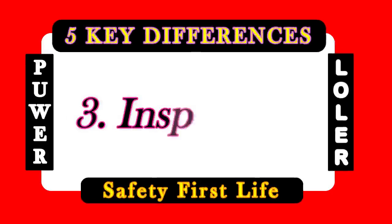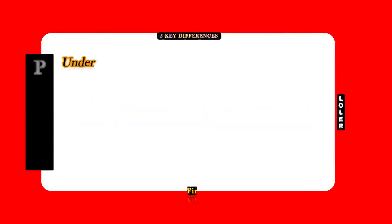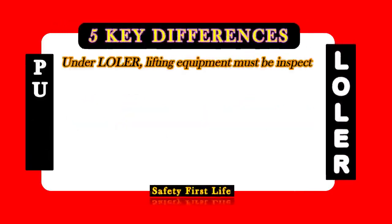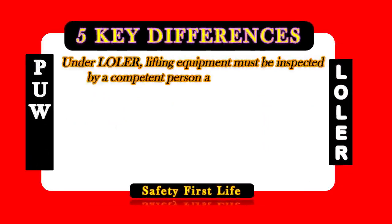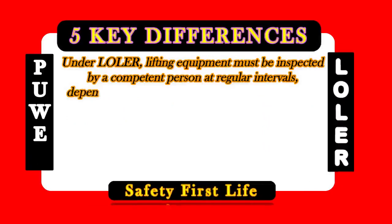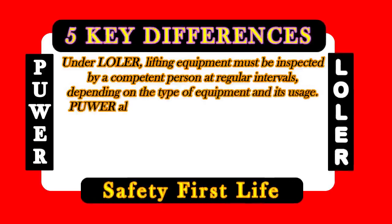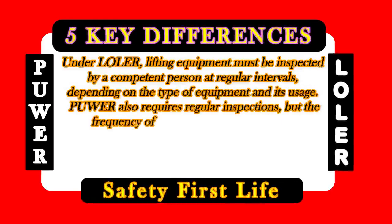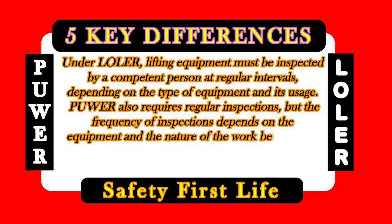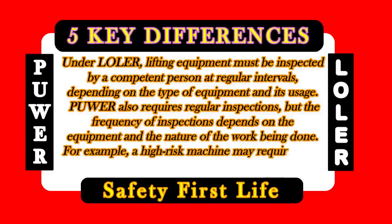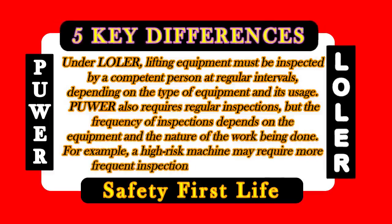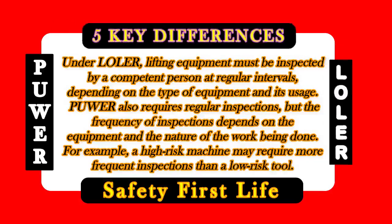Difference 3: Inspections. Under LOLER, lifting equipment must be inspected by a competent person at regular intervals, depending on the type of equipment and its usage. PUWER also requires regular inspections, but the frequency depends on the equipment and the nature of the work being done. For example, a high-risk machine may require more frequent inspections than a low-risk tool.